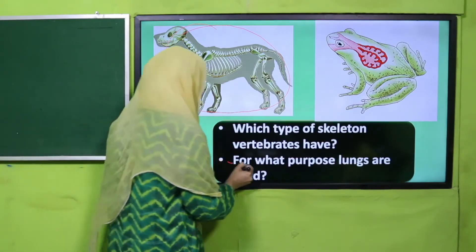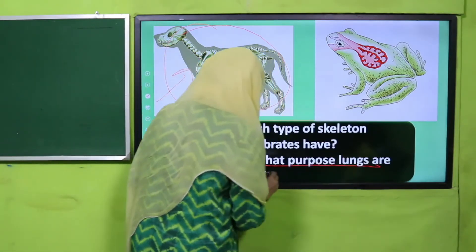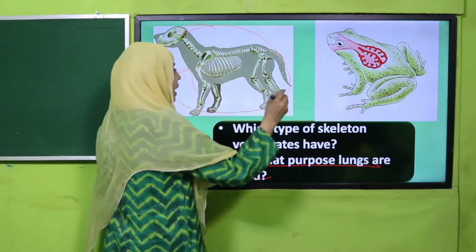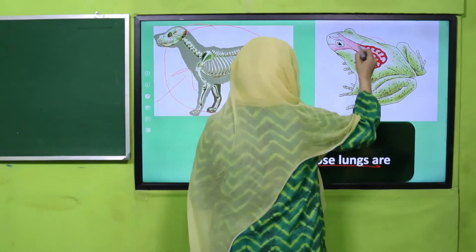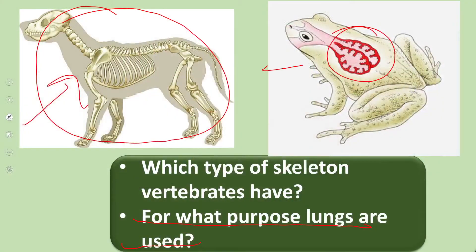Now look at the frog very carefully. For what purpose are lungs used? These are the lungs of this frog. Why are they present in its body? They help in breathing. So our lungs help us in breathing.